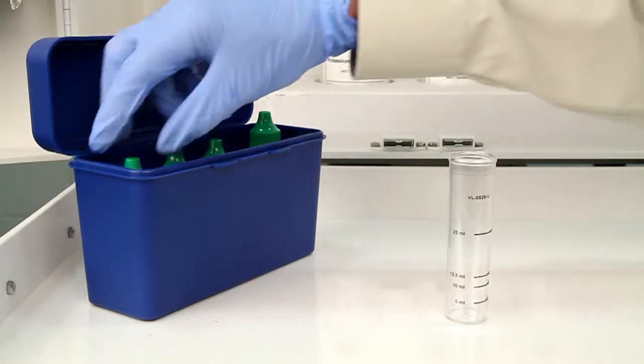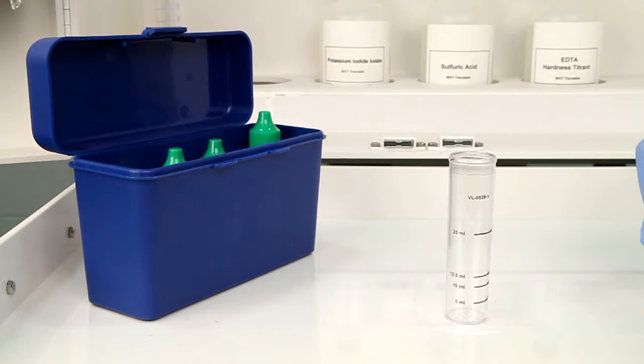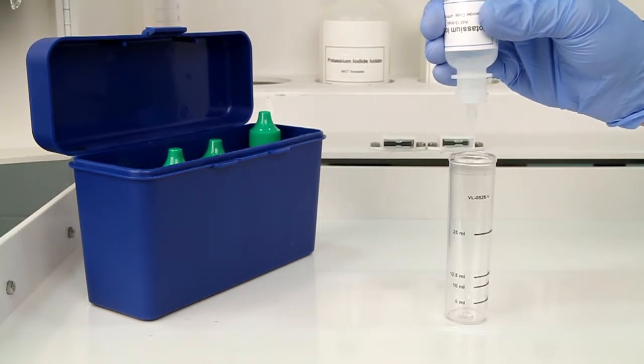Before adding your sample to the vial, add 10 drops of potassium iodide 10%. The bottle contains a dropper tip, so it's important to hold the bottle vertically to get a consistent drop size.